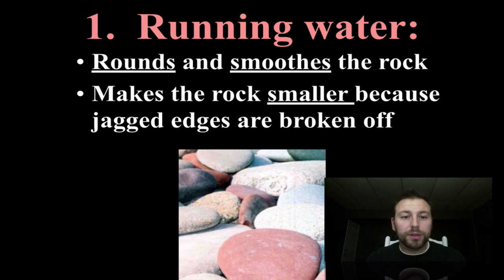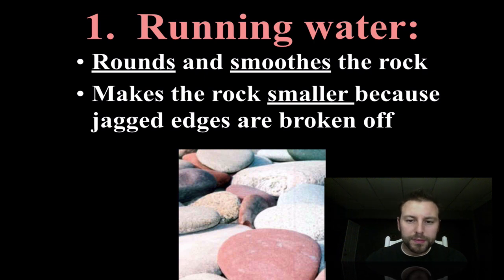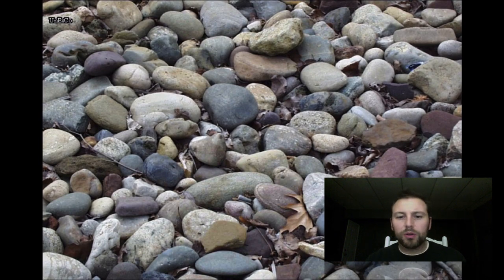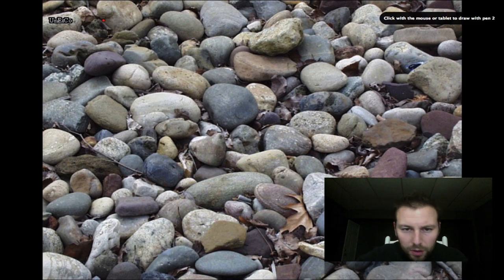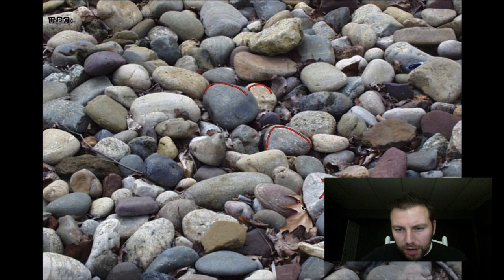Running water rounds and smooths out the rocks. As running water flows over those surfaces it carries very small particles with it which are going to weather away or round out any jagged edges. It also makes the rocks smaller because all these edges are broken off. Here is typical riverbed sediment that we might see, and notice on every one of them — rounded edges. You probably have a very hard time finding anything with a real jagged edge.